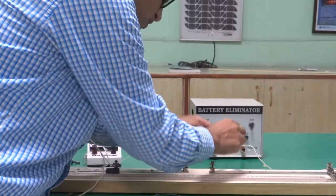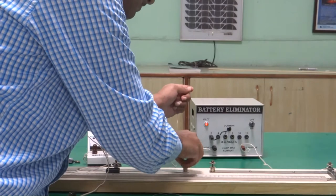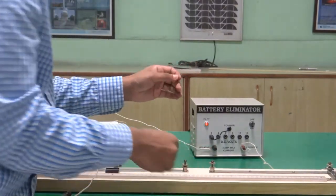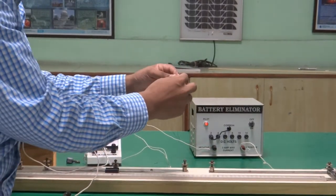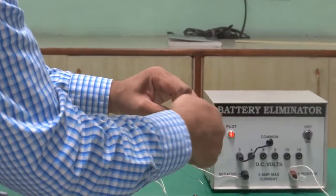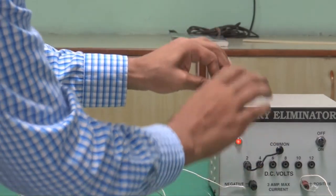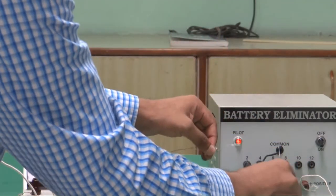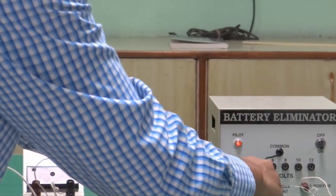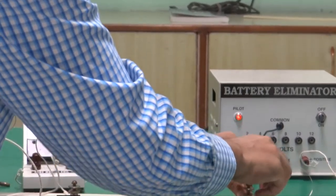So first of all, what we will be doing is, take the two wires and make the connection as shown here. So, these two wires are connected in series, attach the extremities over here.